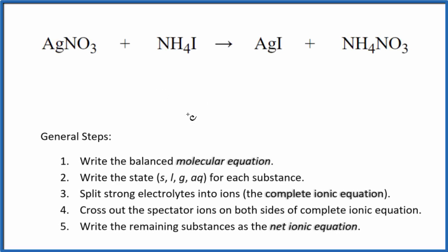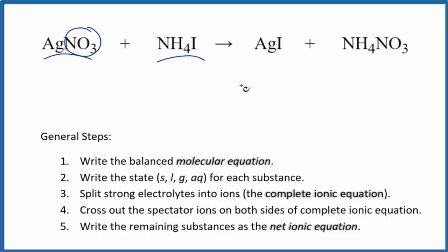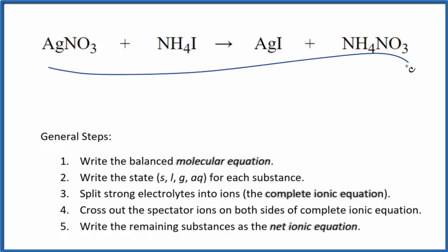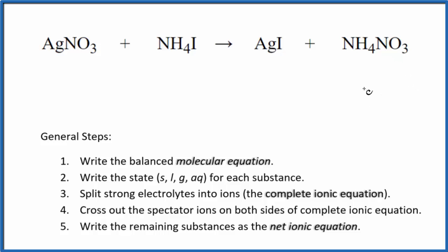In this video, we'll write the balanced net ionic equation for AgNO3 plus NH4I. This is silver nitrate and then we have ammonium iodide. The first thing we need to do when we have these net ionic equations is balance the molecular equation. This is our molecular equation, and when I look at it, it's already balanced.